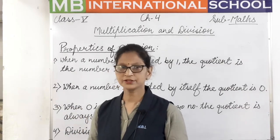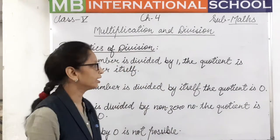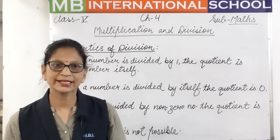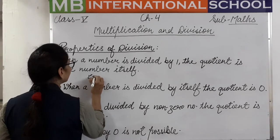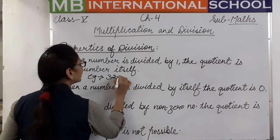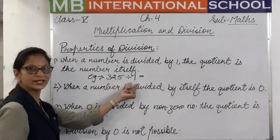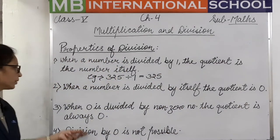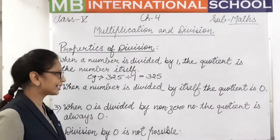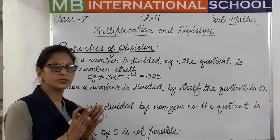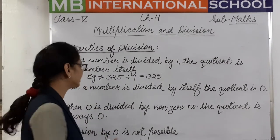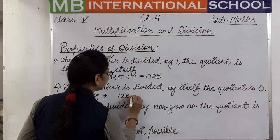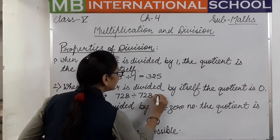Now we will discuss the properties of division. First: when a number is divided by one, the quotient is the number itself. Jab bhi koi number one se divide kiya jaata hai, to answer same number hi aayega. For example, 325 divided by 1 equals 325. Next property: when a number is divided by itself, the quotient is 0. For example, 728 divided by 728 equals 0.